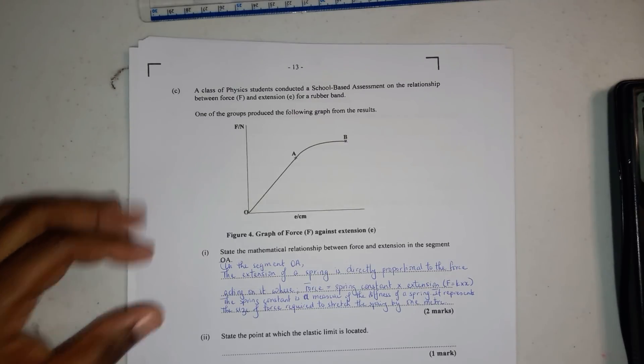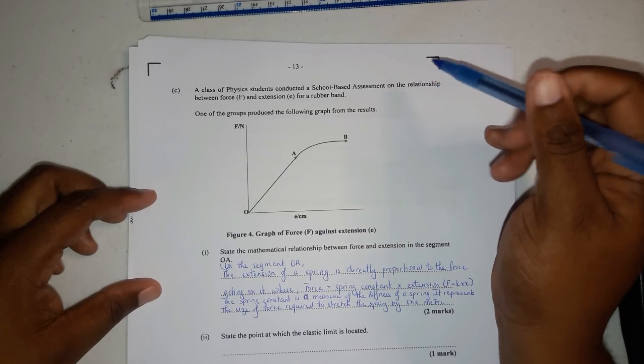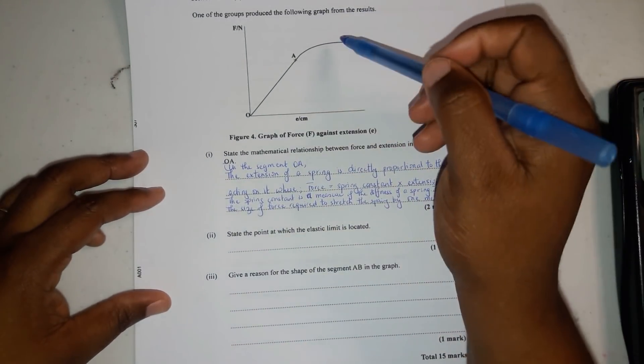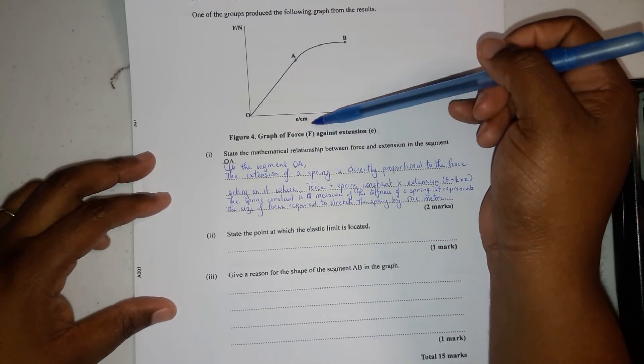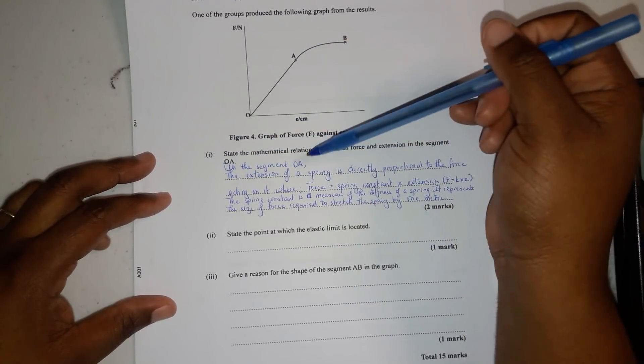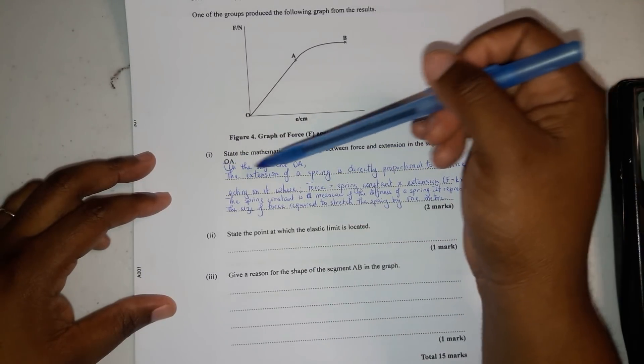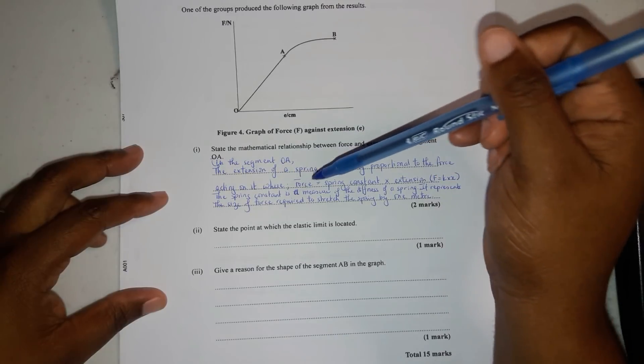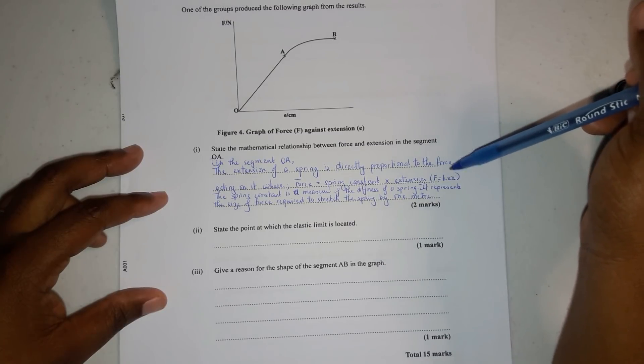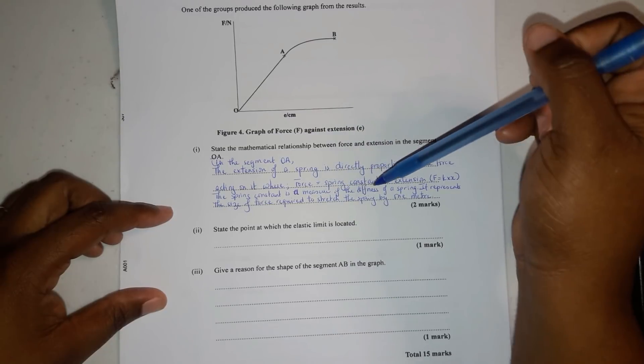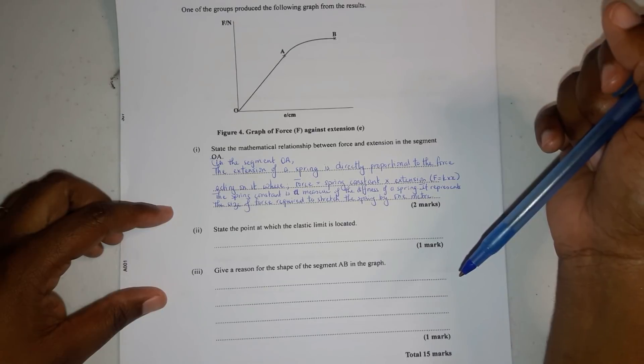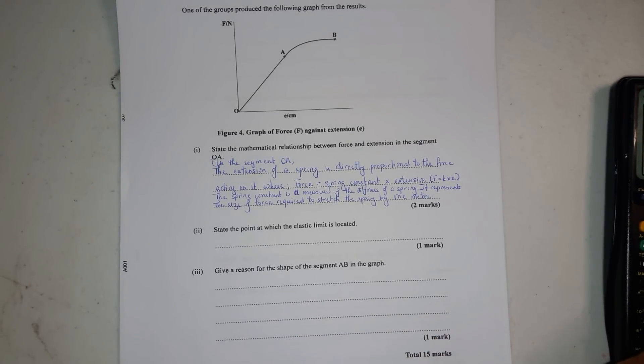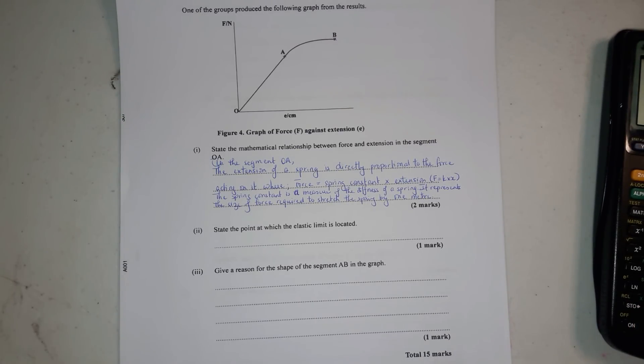For part C, a class of physics students conducted a student-based assessment on the relationship between force and extension for a rubber band. One of the groups produced the following graph from the results, force against extension. Got a straight line graph and then a curve. It says state the mathematical relationship between force and extension in the segment OA. In segment OA, the extension of a spring is directly proportional to the force acting on it, where force equals spring constant times extension. F equals kx. This spring constant is a measure of the stiffness of a spring.